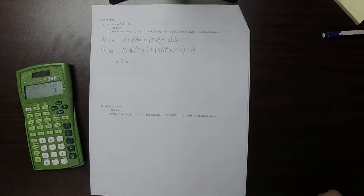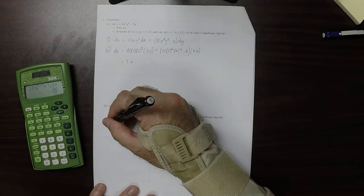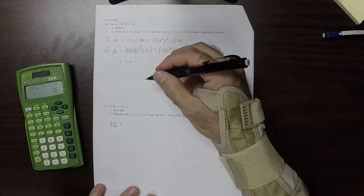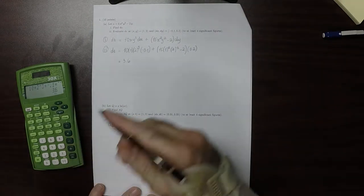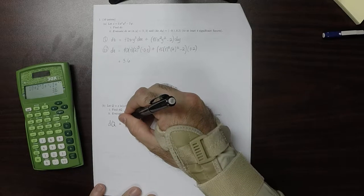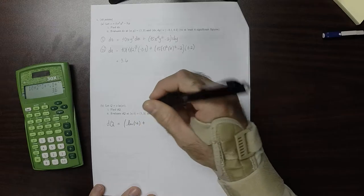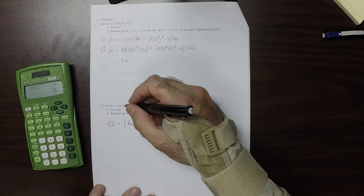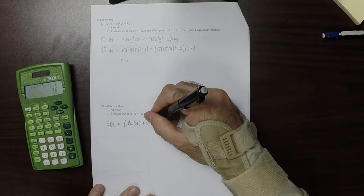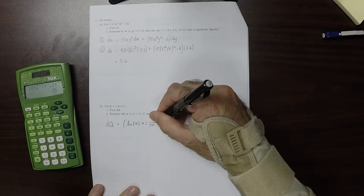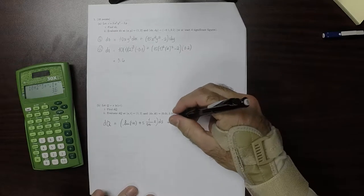OK, so similar exercise in part b here. So find dq. OK, dq. That would be the s partial ds. So this is the product of two functions of s, so we'll need to use the product rule. So that would be 1 times log st, plus s multiplied by s multiplied by 1 over st, and then multiplied by s, the chain rule, ds.